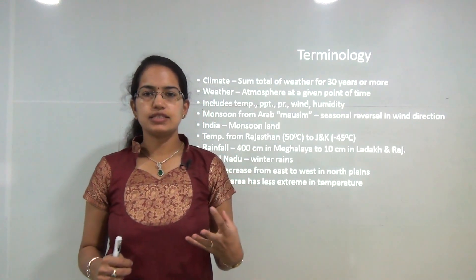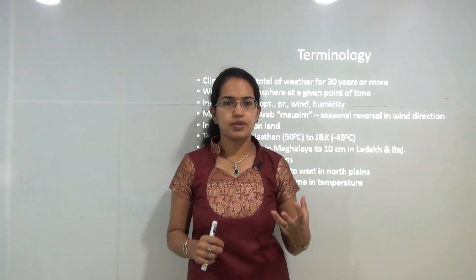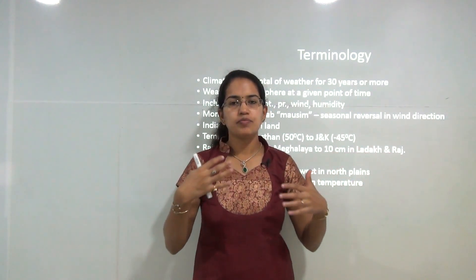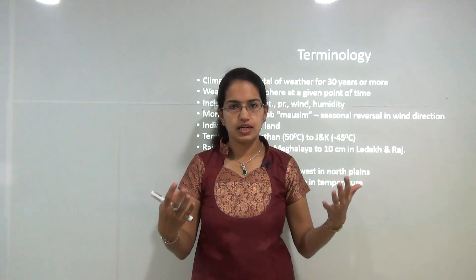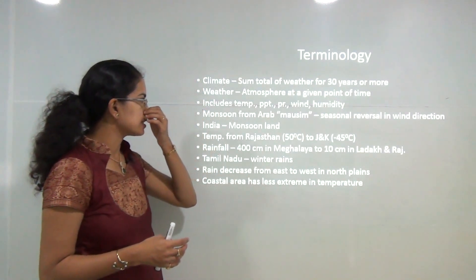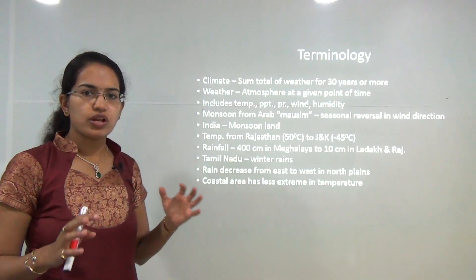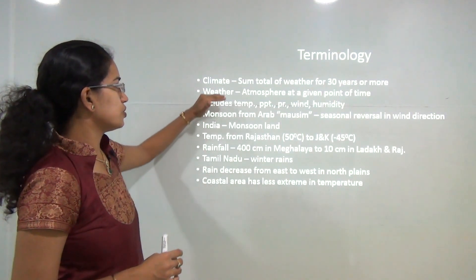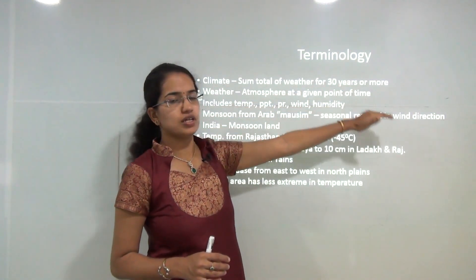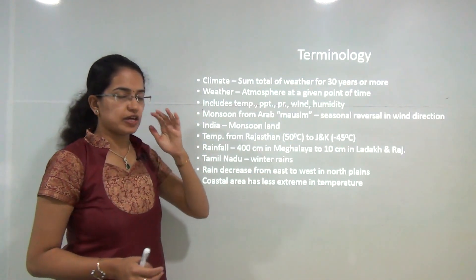Based on that, the region of Thar desert has an arid climate, because over the years the average phenomena has shown that the climate is arid with less rainfall and high temperatures. So climate is the sum total of weather for 30 years or more, whereas weather is at a given point of time.